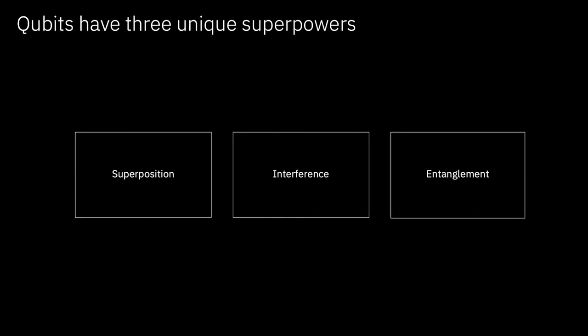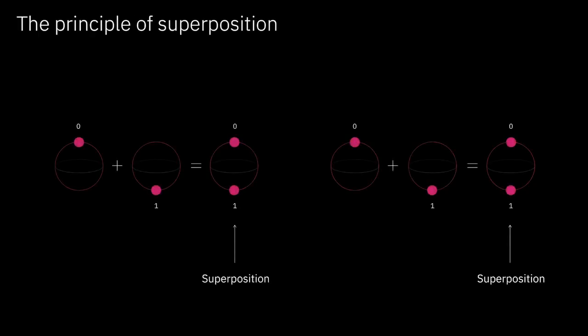Quantum affords us three superpowers that are exhibited in the qubits. They are the powers of superposition, the power of interference, and the power of entanglement. So let's unpack those. The principle of superposition is actually quite straightforward to understand. So let's start on the left-hand side. We have our north pole zero or south pole one. And if we add those two states, now we have a superposition qubit that has both a zero and a one simultaneously, north and south pole.